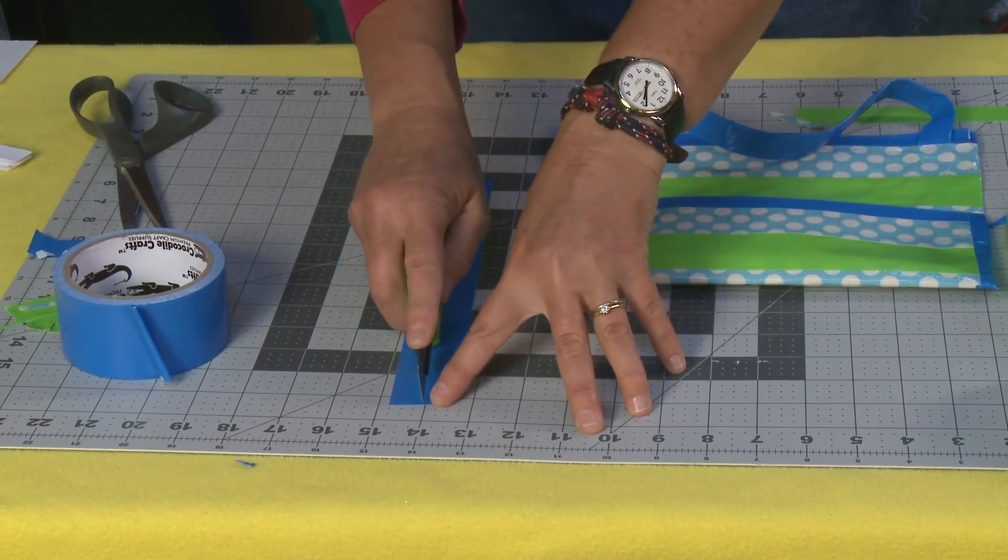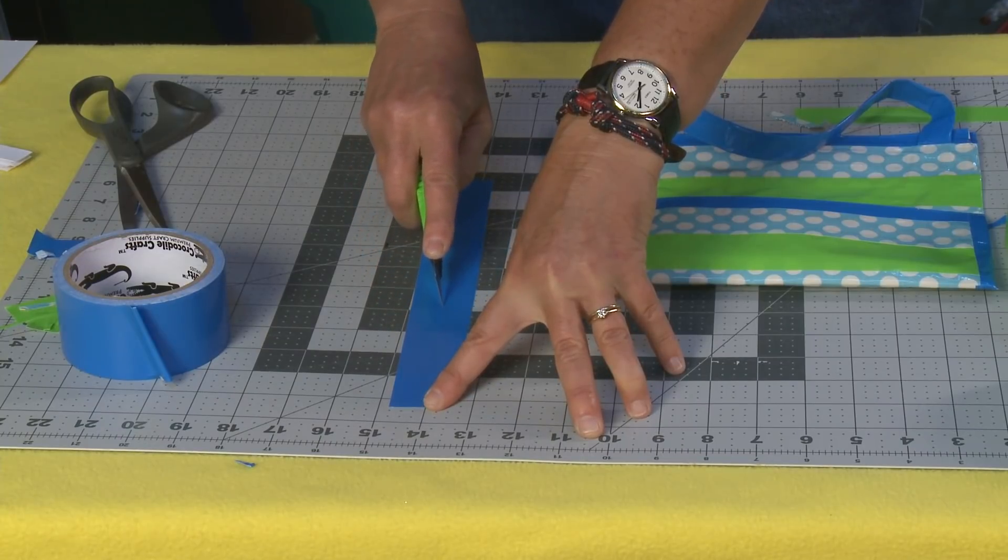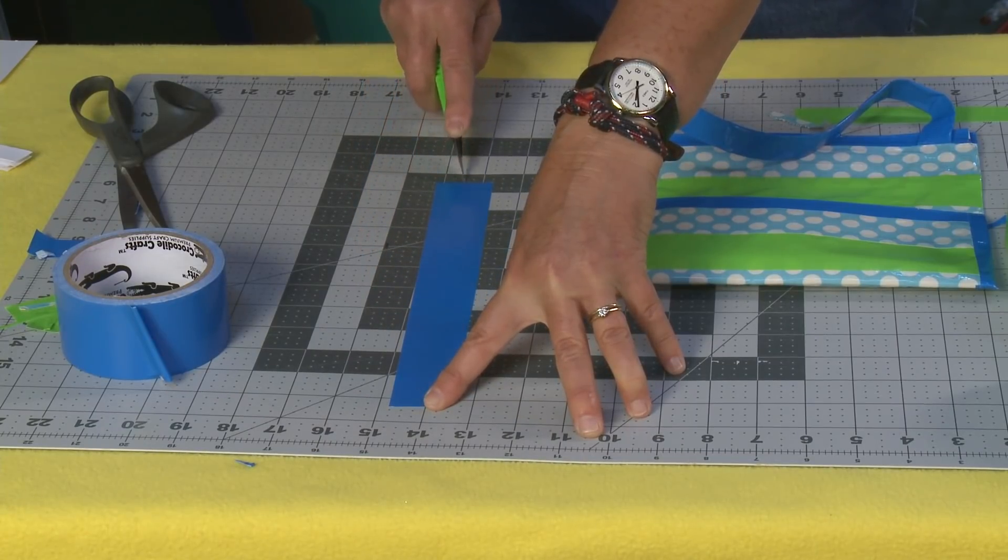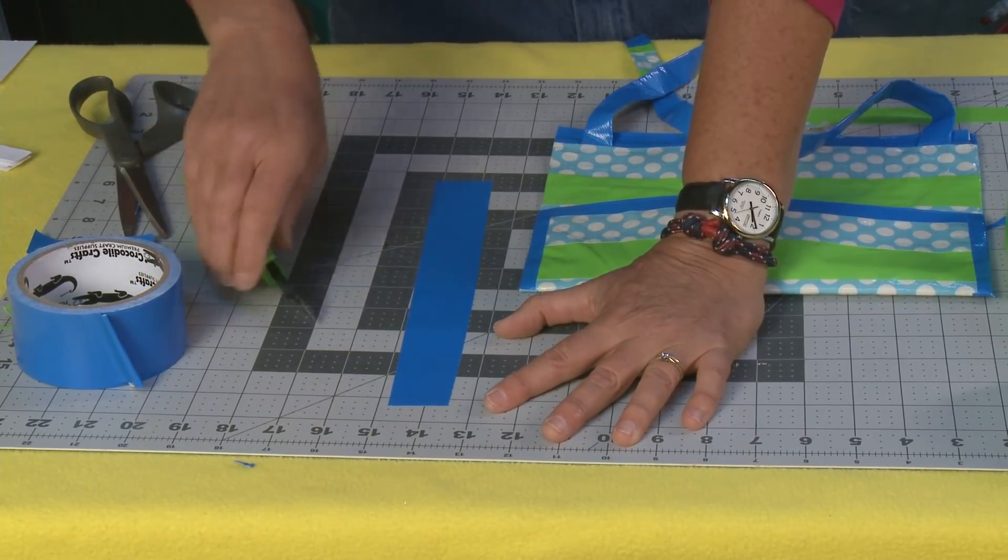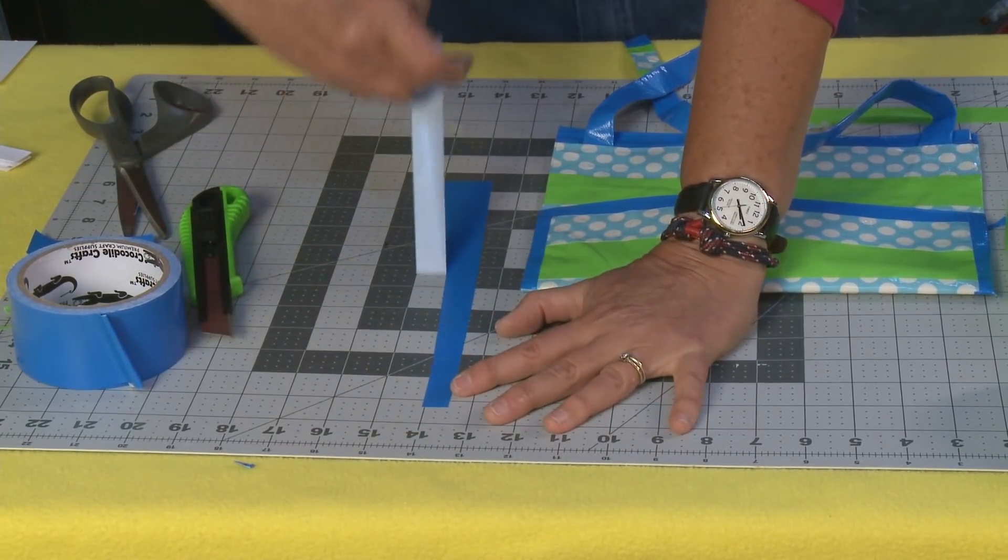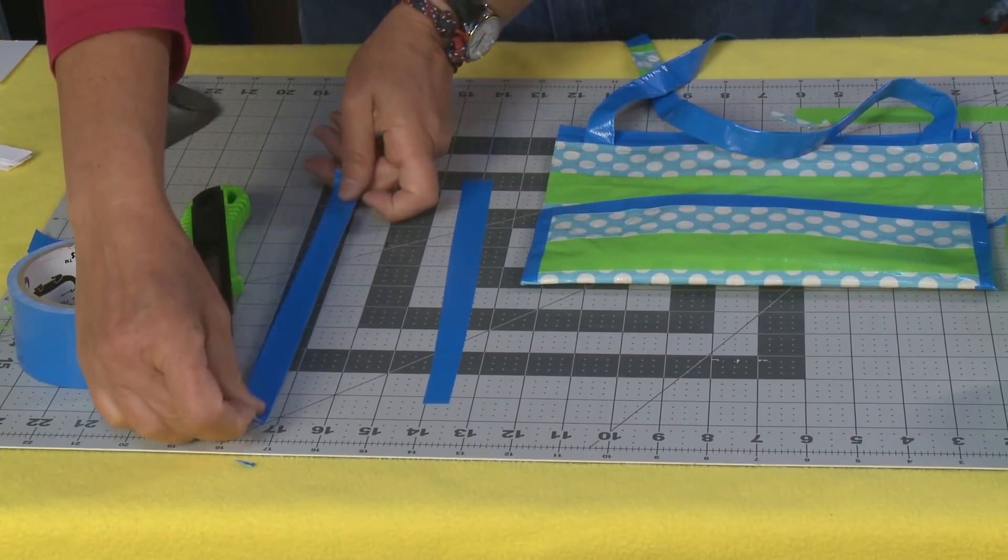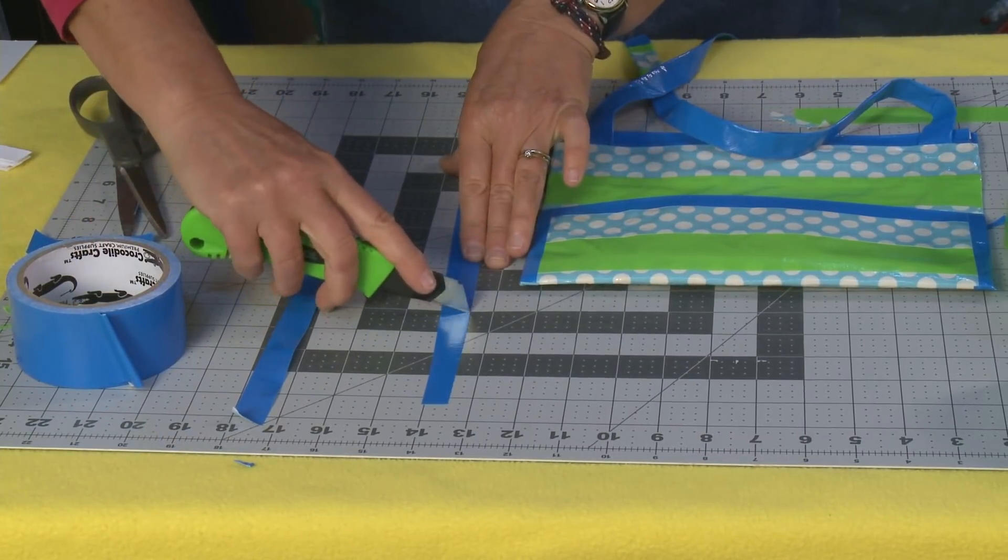This remaining piece here I'm going to slice right down the middle, and then I'm going to cut myself some little strips. I'll need this big piece and then I'm going to cut some little strips.